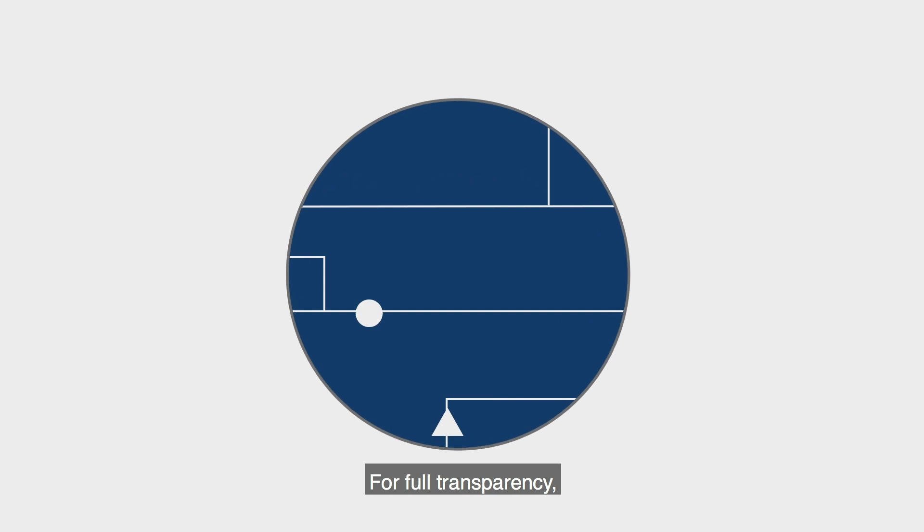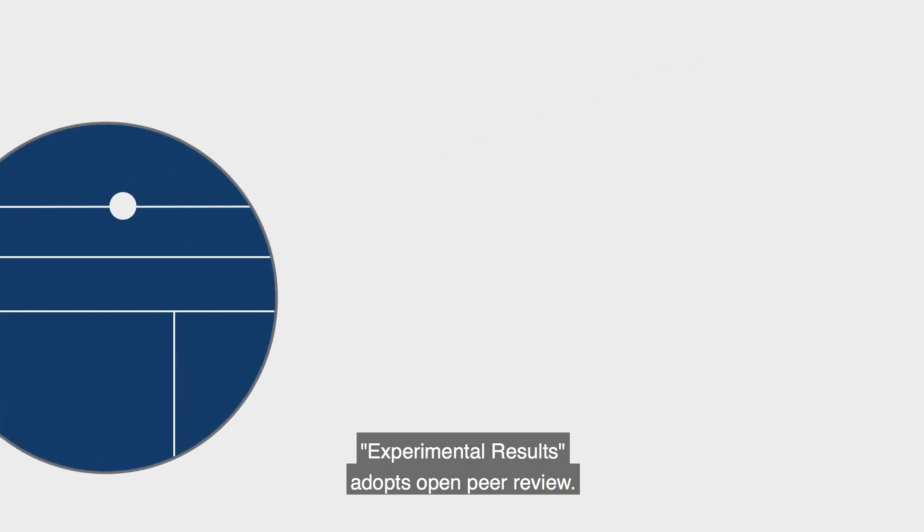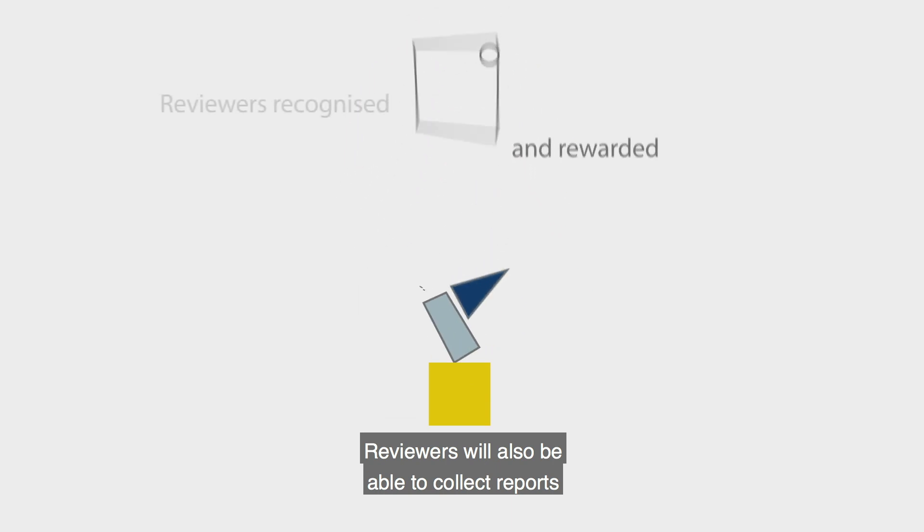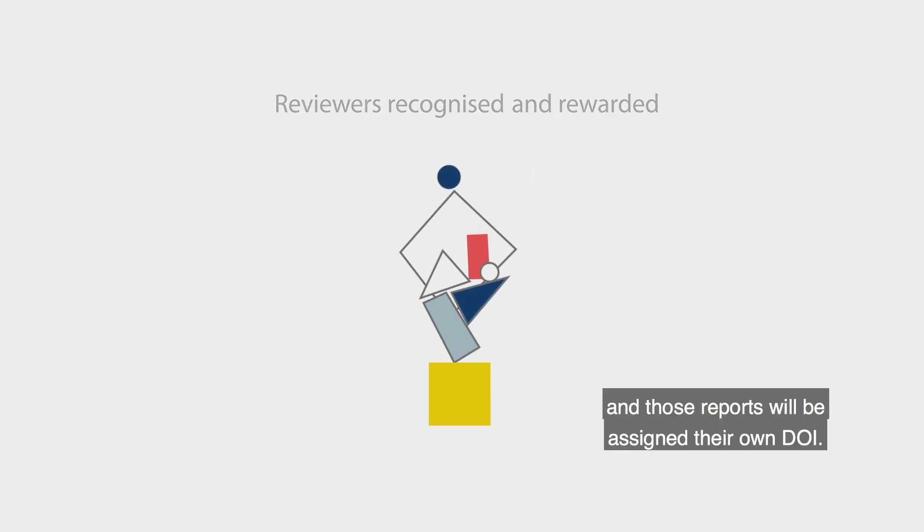For full transparency, Experimental Results adopts open peer review. Reviewers will also be able to collect reports as part of their academic record, and those reports will be assigned their own DOI.